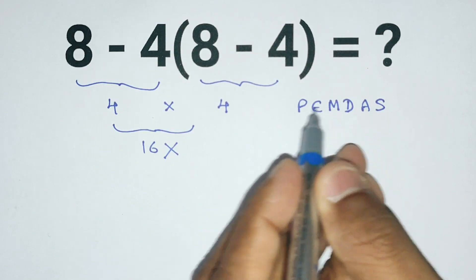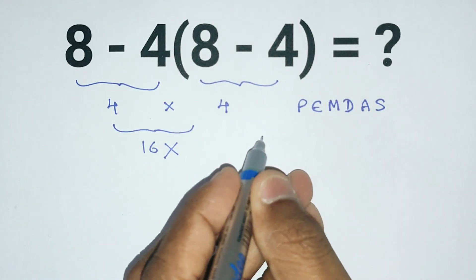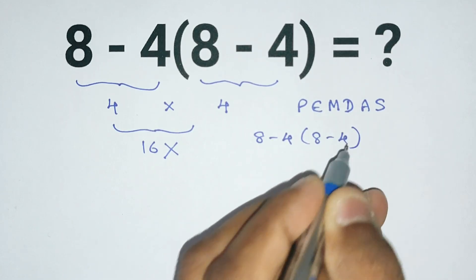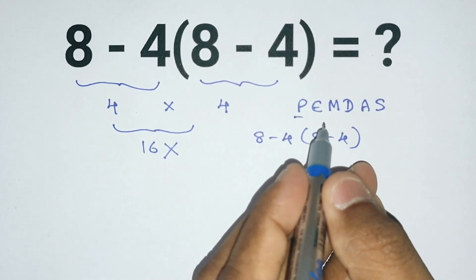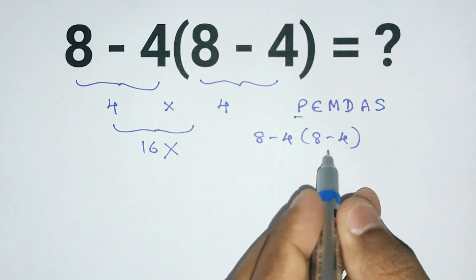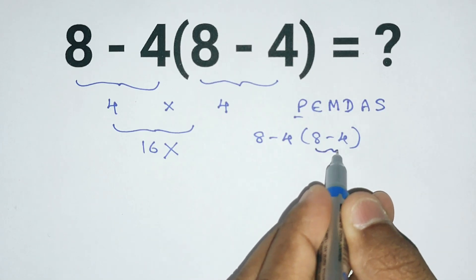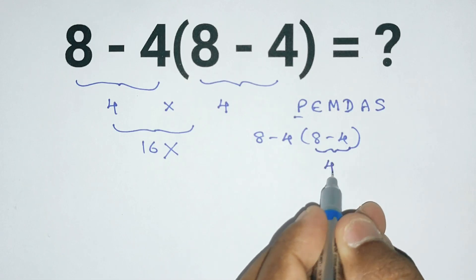Now let's apply PEMDAS to this expression: 8 minus 4 parenthesis 8 minus 4. First we look for parenthesis, and here we have one. So let's solve what's inside the parenthesis first. We have 8 minus 4, which equals 4.